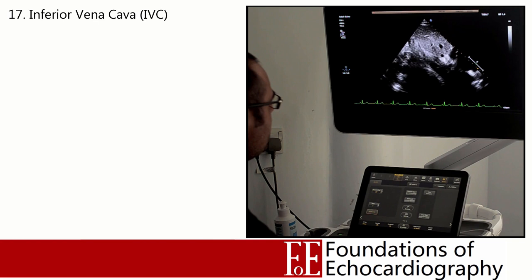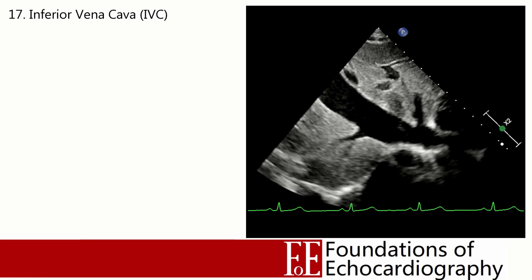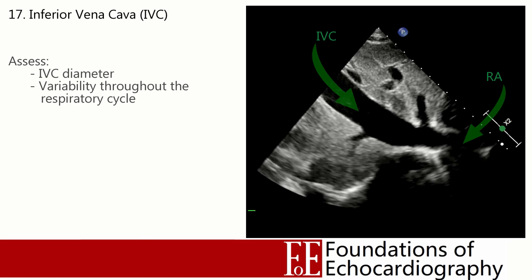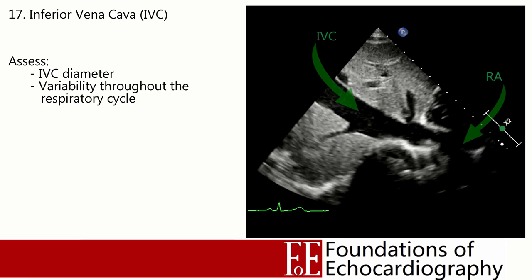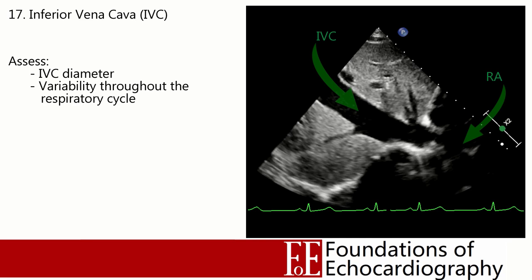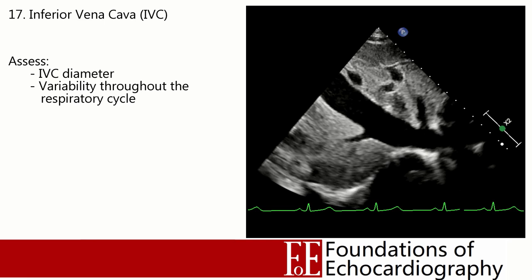Next we identify the inferior vena cava running into the right atrium. Lift the body of the probe and rotate anti-clockwise 90 degrees so that the orientation marker points straight towards the head, then tilt the imaging sector slightly towards the patient's right. Here we can see the IVC running through the liver into the right atrium, as well as the confluence of the hepatic veins inserting into the IVC. Measuring the IVC's diameter and collapsibility throughout the respiratory cycle can be useful for estimating fluid responsiveness, which will be covered in detail in a dedicated lecture later in this series.